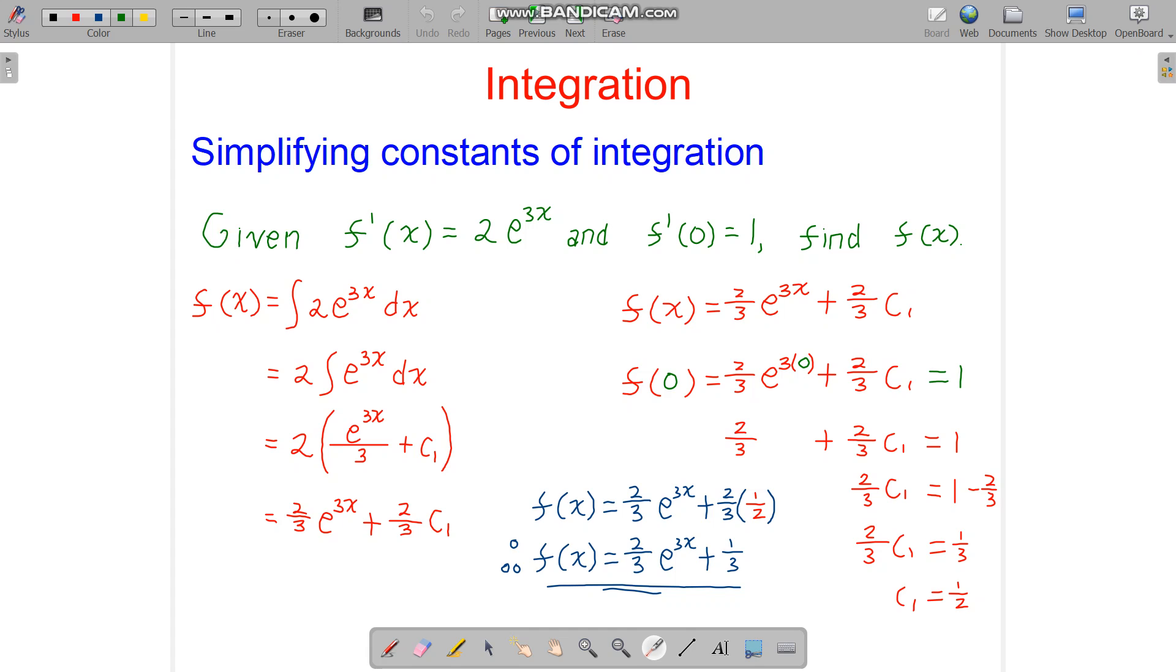So for example, if we are given f prime of x equals this, f prime of 0 equals 1, find f of x. So f of x is the integral, of course. And we can pull the 2 out of the integration. So we integrate e to the power of 3x, which is exactly the same, divided by the derivative of 3x, which is 3. Plus, when we integrate, we have a constant.